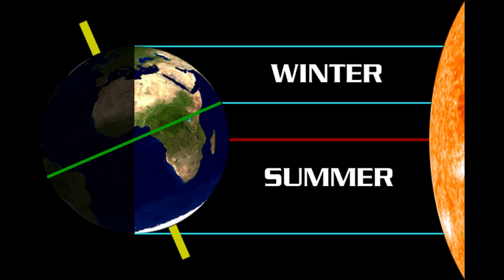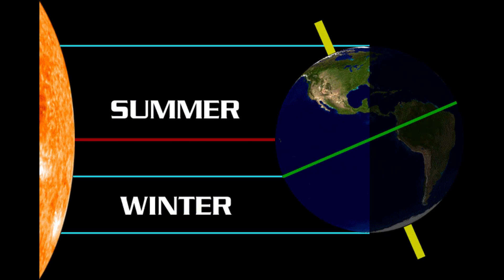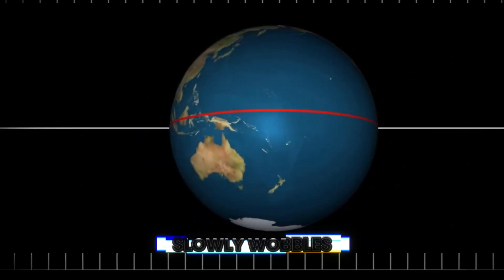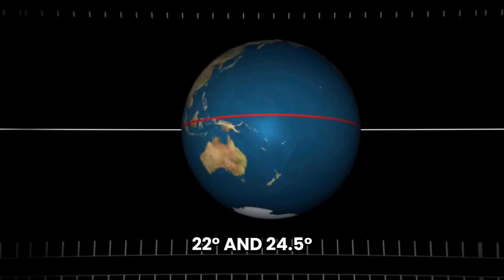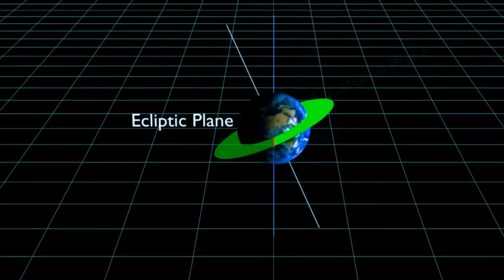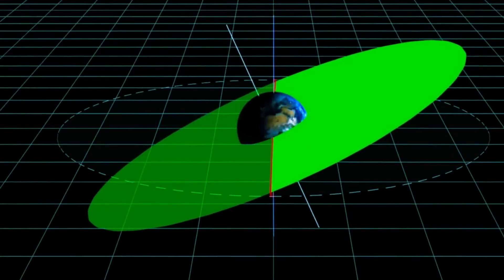Those distances help shape seasons and subtle climate patterns. Earth also tilts. Our axis leans and slowly wobbles. The tilt, obliquity, swings between about 22 degrees and 24.5 degrees over approximately 41,000 years, shifting how sunlight paints the hemispheres.